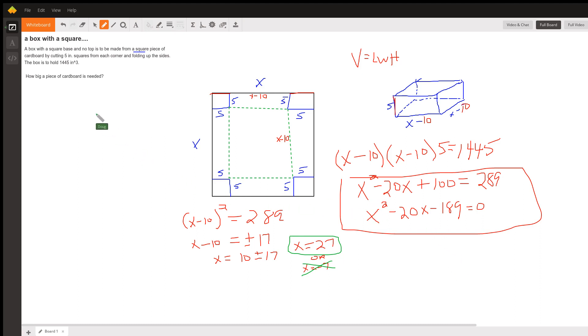And you could check that out by letting X equal 27. That means that this box is 17 by 17 by 5, which equals 1445. And I'll bet if you multiply those all together, you'll get 1445 cubic inches. There you go.